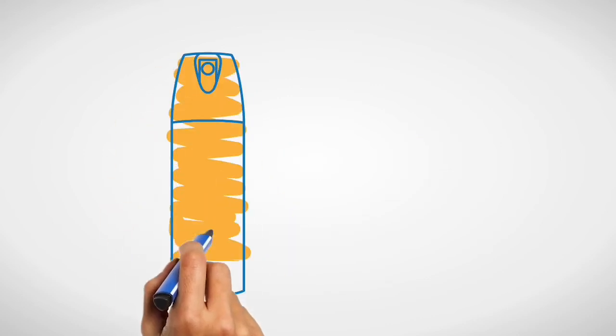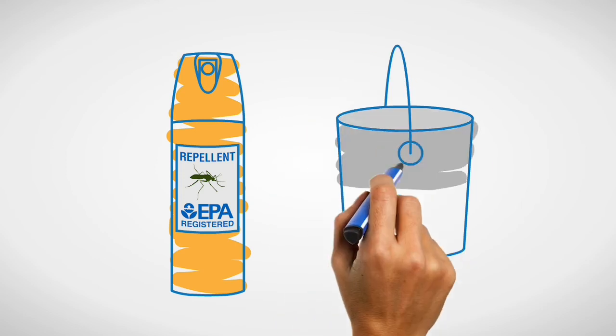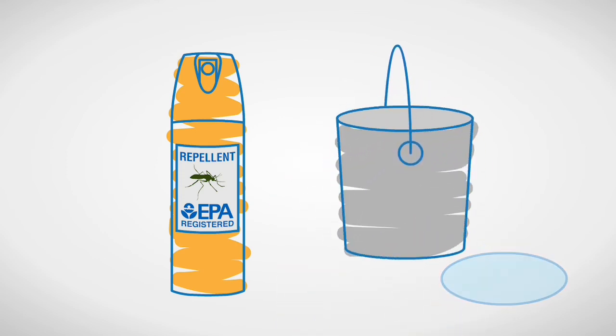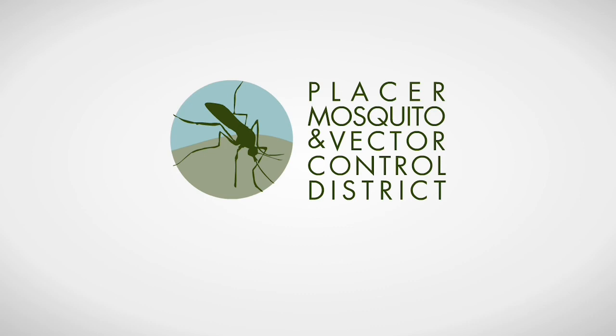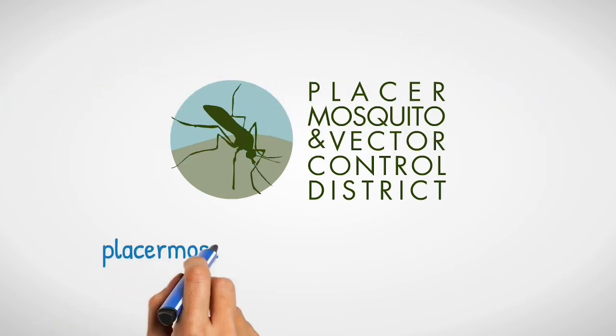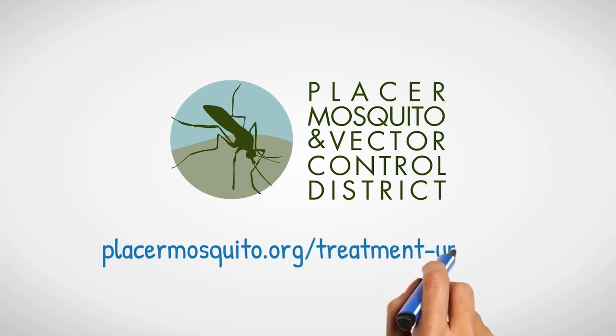Do your part by using an EPA registered repellent, dumping and draining standing water, and contacting us, the Placer Mosquito and Vector Control District, if you need help controlling mosquitoes around your home. Visit PlacerMosquito.org for more information and to sign up for treatment updates.